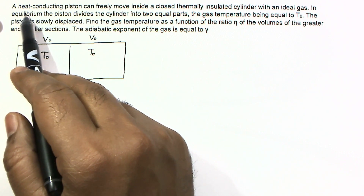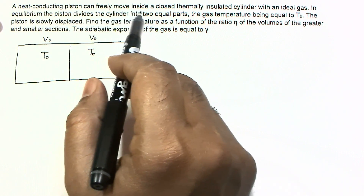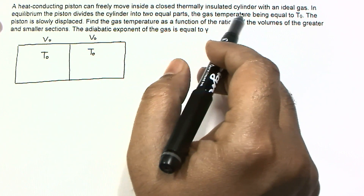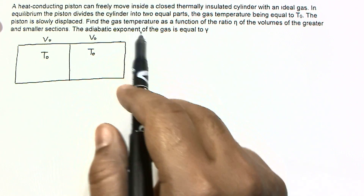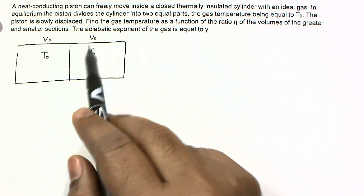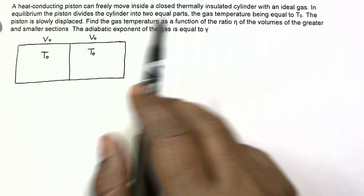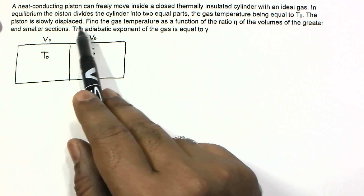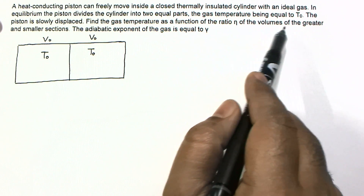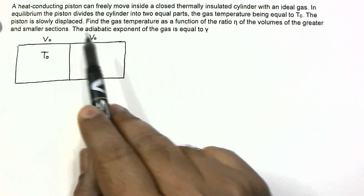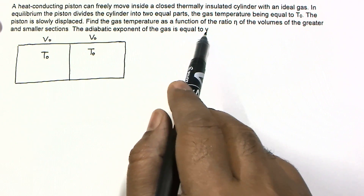In this question, a heat-conducting piston can freely move inside a closed thermally insulated cylinder with an ideal gas. In equilibrium, the piston divides the cylinder into two equal parts. The gas temperature is equal to T0, and the piston is slowly displaced. Find the gas temperature as a function of the ratio eta of the volumes of the greater and the smaller sections. The adiabatic exponent of the gas is equal to gamma.